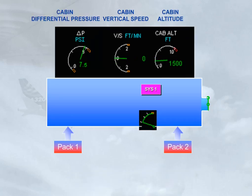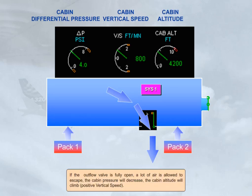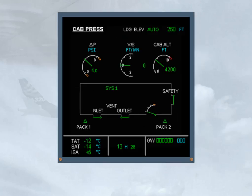If the outflow valve is fully open, a lot of air is allowed to escape, the cabin pressure will decrease, the cabin altitude will climb — positive vertical speed. The crew can monitor all cabin pressure functions on the ECAM cabin pressure page.